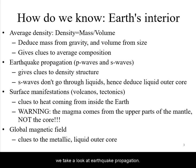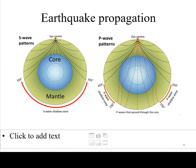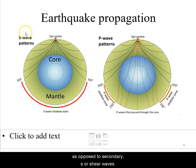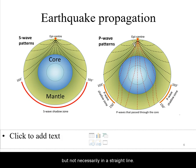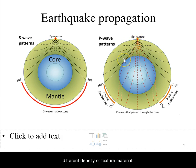Second, we take a look at earthquake propagation. Earthquakes are a type of wave that has many different components, particularly the P waves, also known as primary or pressure waves, as opposed to the secondary S waves, also known as shear waves. When an earthquake happens on one side of the Earth — what is known as the epicenter — the waves will propagate right through the Earth, but not necessarily in a straight line. They tend to reflect or bend as they travel through different density or texture material.